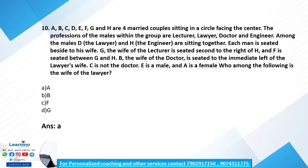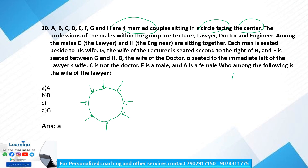Question number 10, our last question — seating arrangement. A, B, C, D, E, F, G and H are four married couples sitting in a circle facing the center. Male professions are lecturer, lawyer, doctor, and engineer. D is the lawyer and H is the engineer, and they are sitting together. Each man is seated beside his wife.